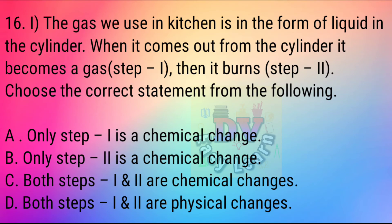Question No. 16: The gas we use in the kitchen is in the form of liquid in the cylinder. When it comes out from the cylinder, it becomes a gas, then it burns. Choose the correct statement from the following.